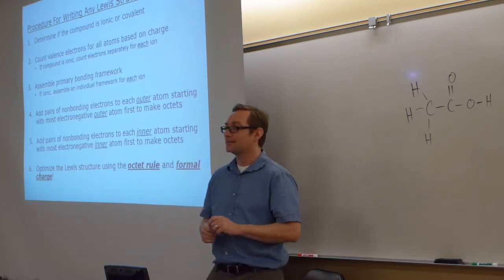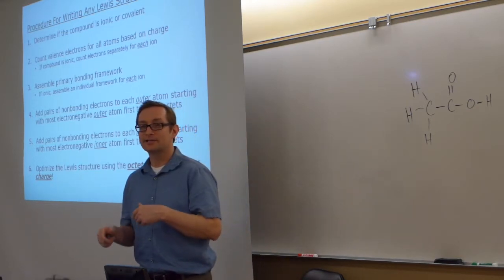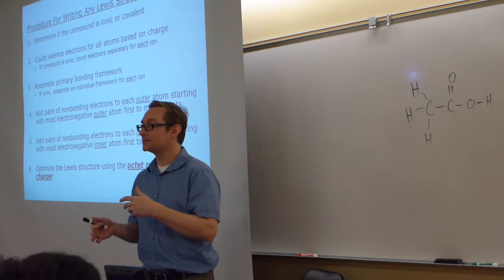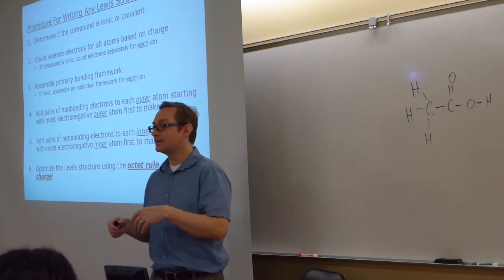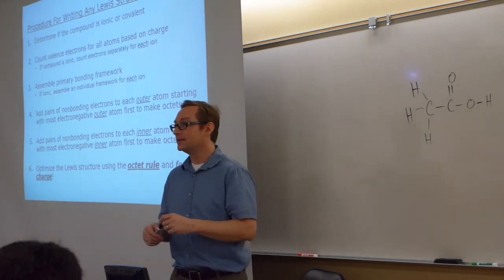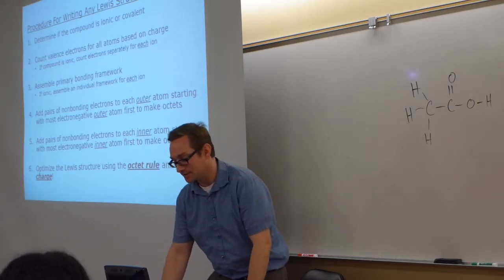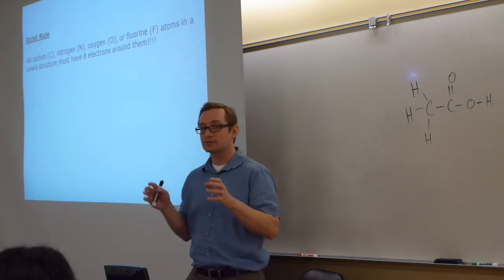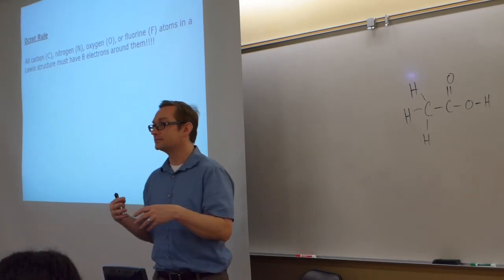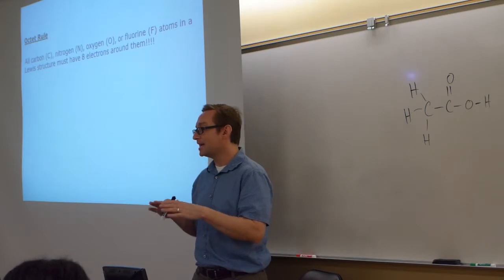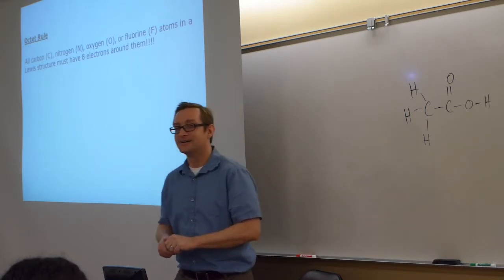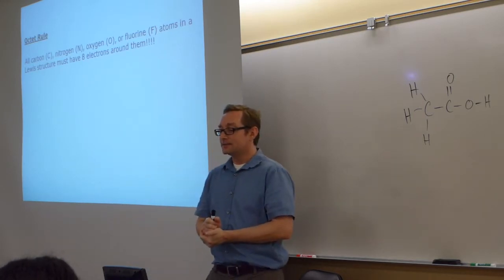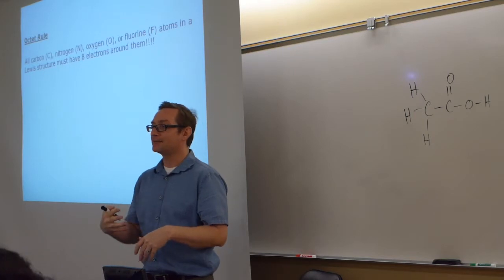What is the octet rule? Eight electrons around every atom — but hydrogen doesn't get an octet. Hydrogen only has one valence electron, so hydrogen atoms are always outer and never get lone pairs assigned to them. That's one exception. But there's actually more to it. In Chem 107, the instructor may have told you all atoms get an octet except hydrogen. I'm going to tell you that's not quite right — I lied a little bit too.